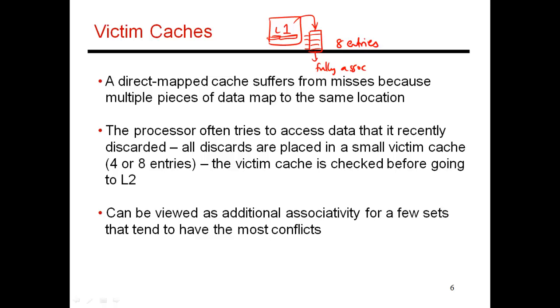So the victim buffer is essentially providing at most eight additional ways for one particular set — for that set with high competition, in addition to the two blocks in L1, eight other blocks mapping to that same set can coexist and all yield L1 cache hits. That's what the victim cache is trying to do: selectively provide more associativity for sets with high competition.